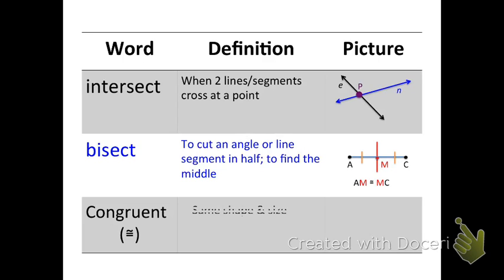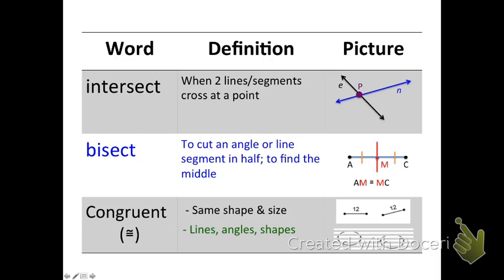And the next word we're going to talk about is congruent. Congruent means the same shape and size. Talks with lines, angles, and different shapes. So, let's look at a couple of pictures of things that are congruent. The first one are two line segments that we have, and they are both 12 units long. The second one we're going to look at are two ovals. And those two ovals are congruent as well. They're the same shape and size.